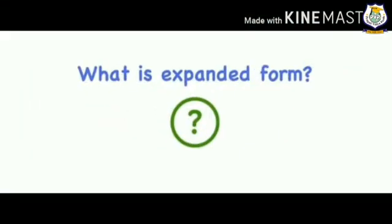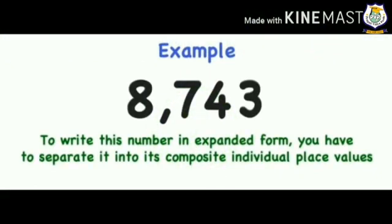Now let's see what the expanded form is. The expanded form of a number is the sum of the place values of its digits. Look at the example here — we have the number 8743. To write this number in expanded form, you have to separate it into its individual place values.